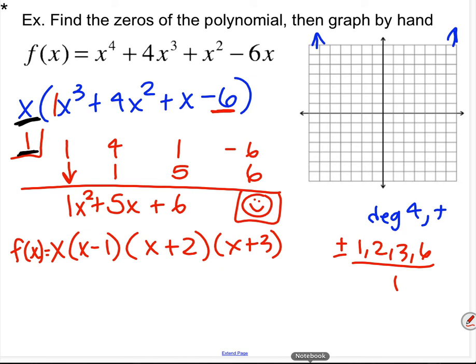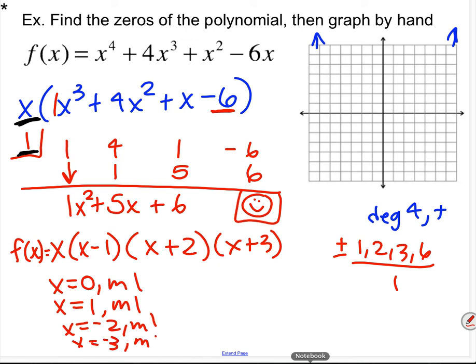x squared plus 5x plus 6 factors to x plus 2 and x plus 3. Remember: I used x equals 1 as the root, so one factor is x minus 1, and I factored out x at the very beginning, so there's an x out front. The fully factored form gives zeros at x equals 0, x equals 1, x equals negative 2, and x equals negative 3, all with multiplicity 1. The graph comes up from the left, straight through all four zeros, and goes up to the right.